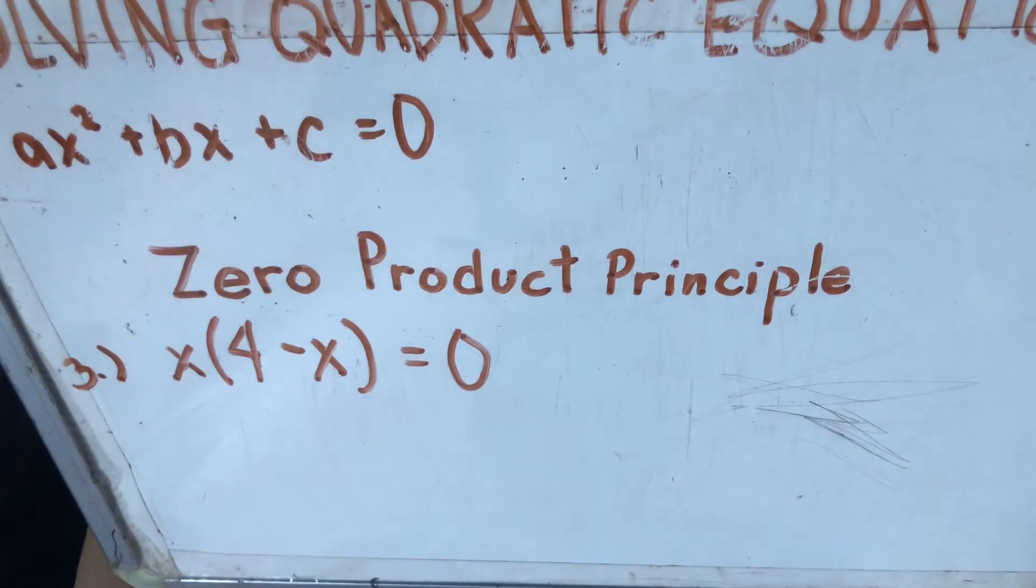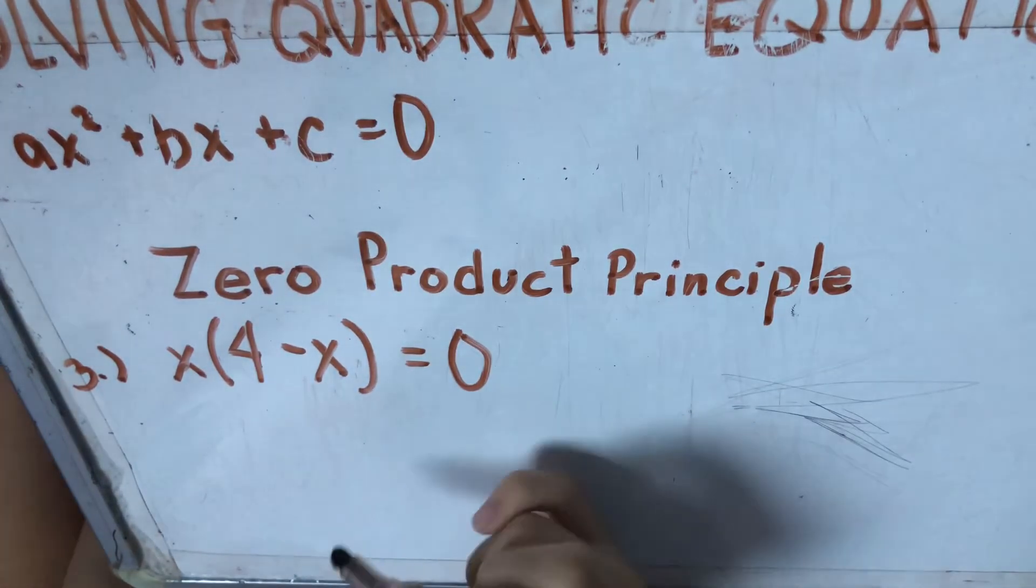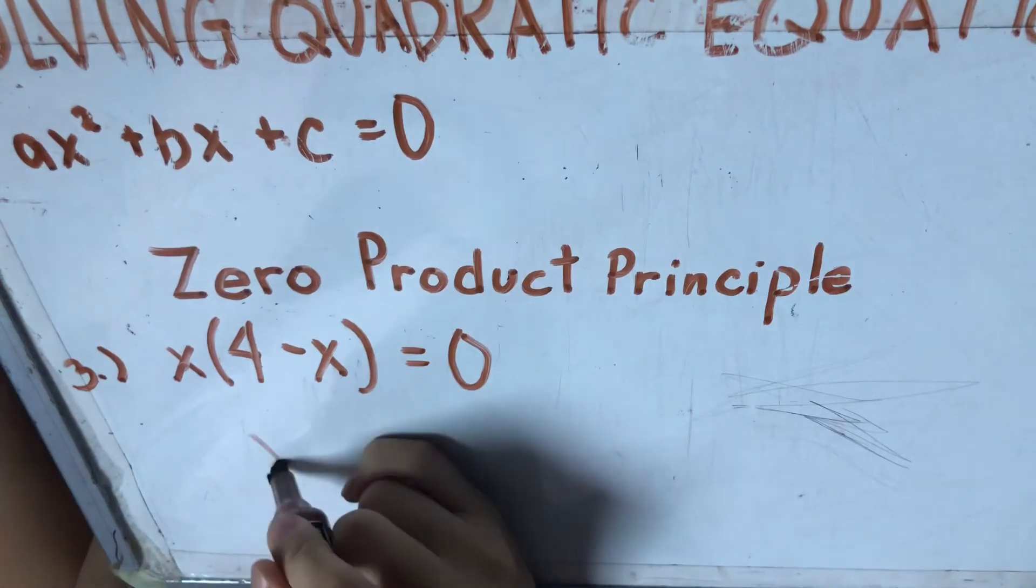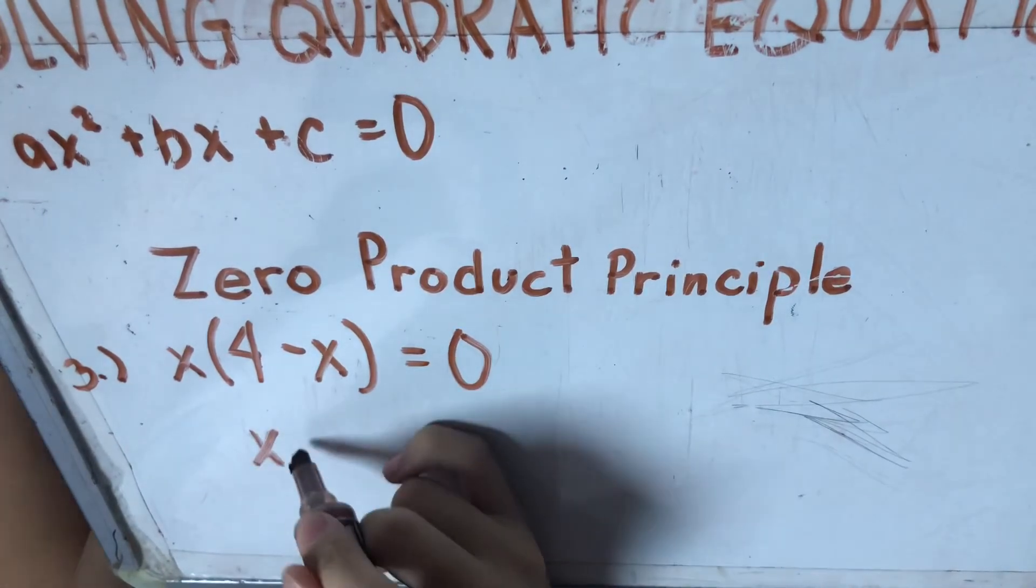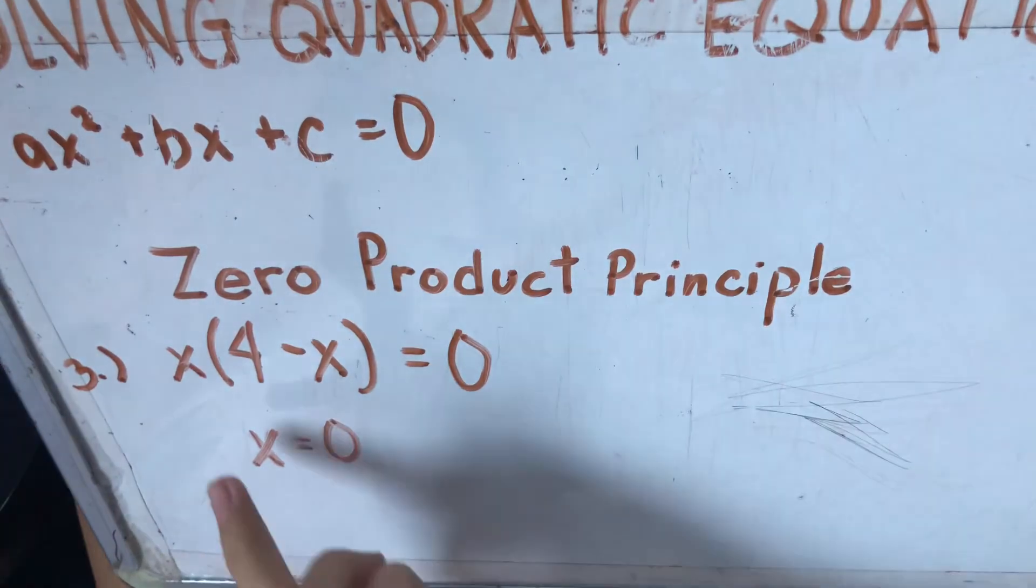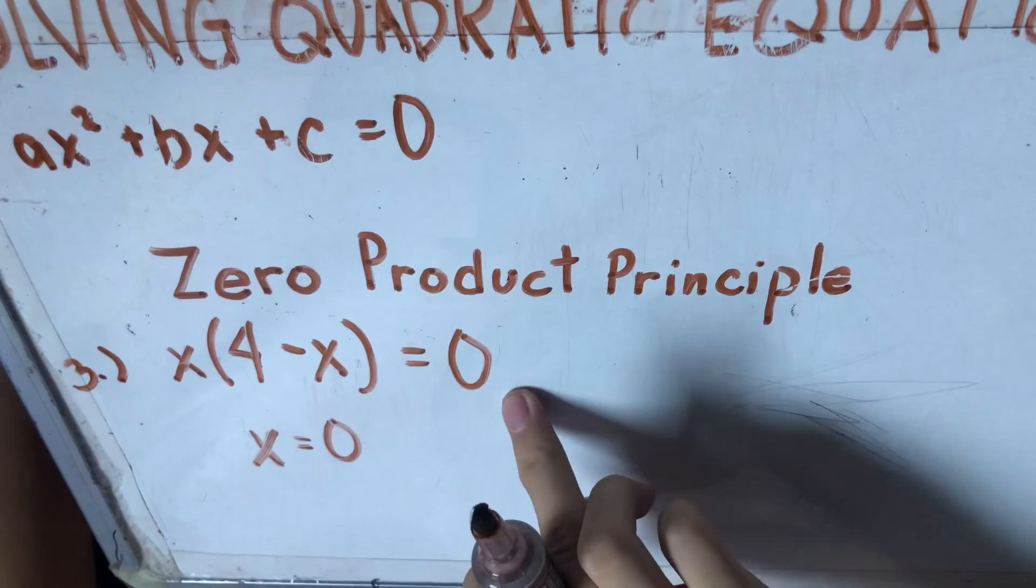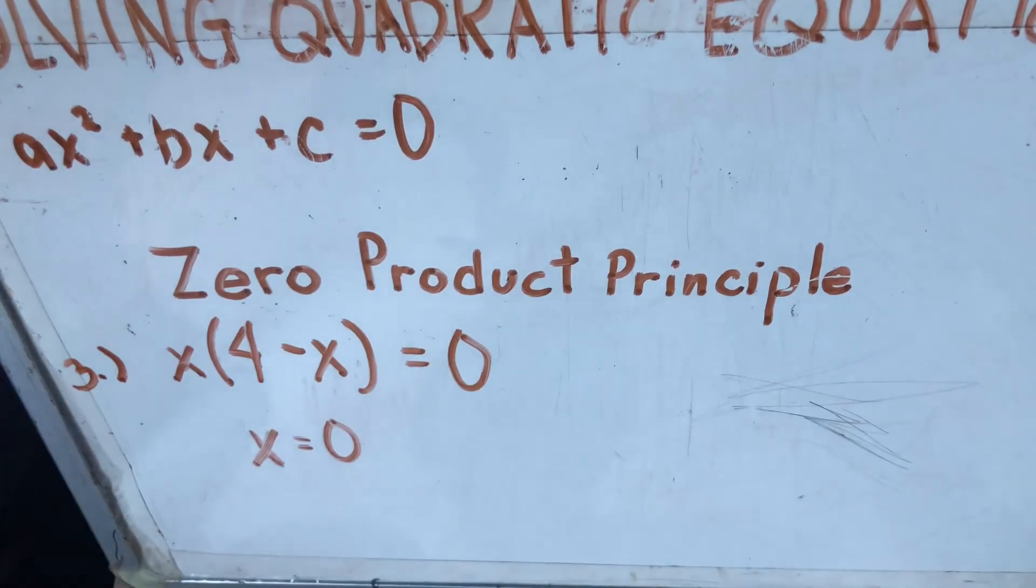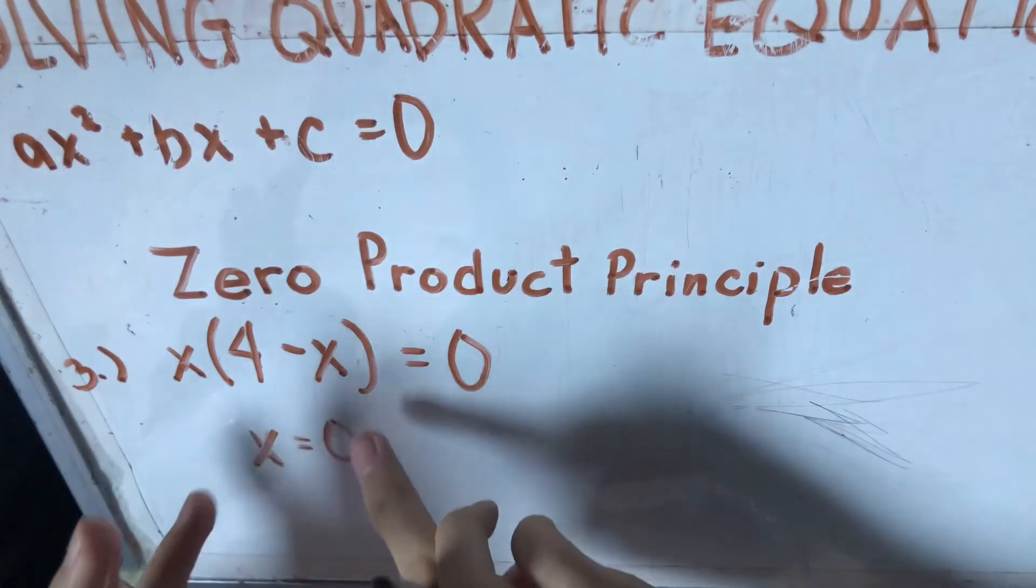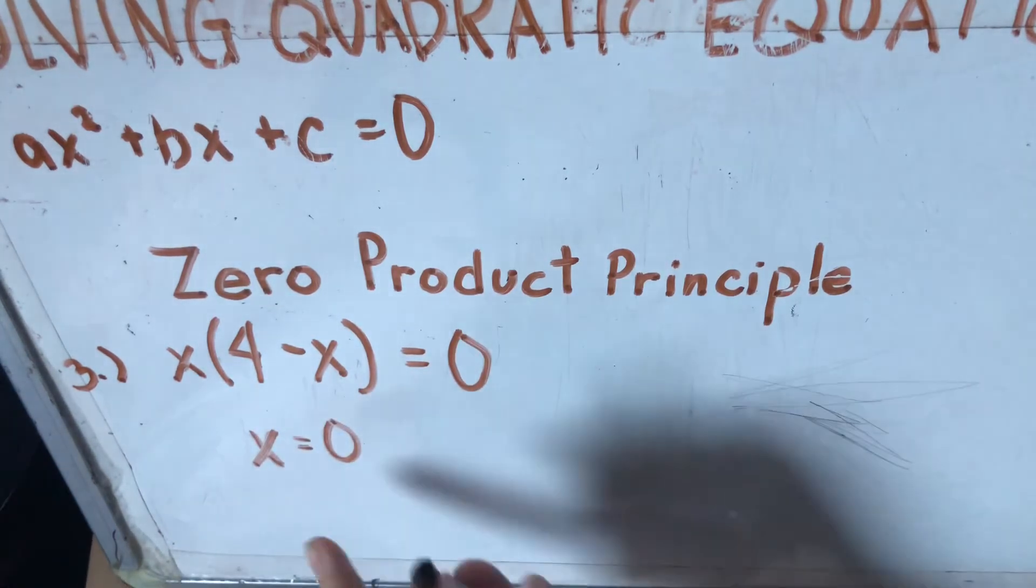So dito, base lang sa pagtingin, pwede natin masabi na yung isang value ni x dito is 0. So bakit? Kasi x diba? So ano yung pwede natin i-multiply sa x na magiging 0? 0. 0 times 4 minus 0, 0 pa rin siya. So may sabi natin na yung isang value ni x is 0.